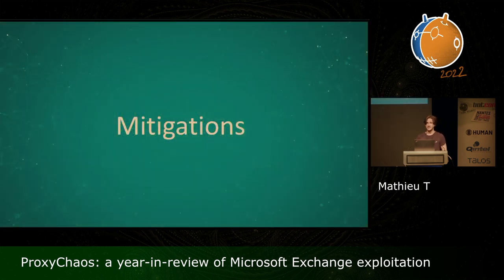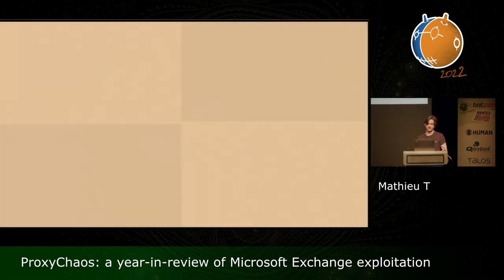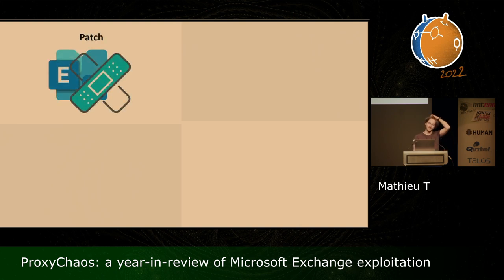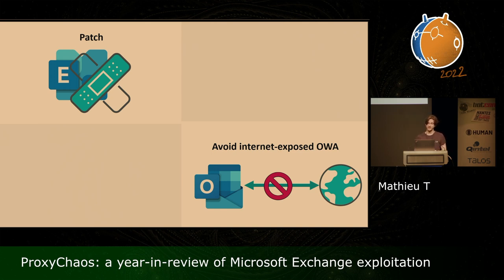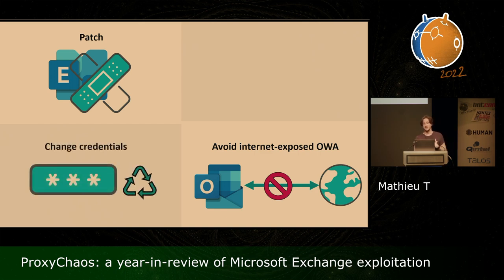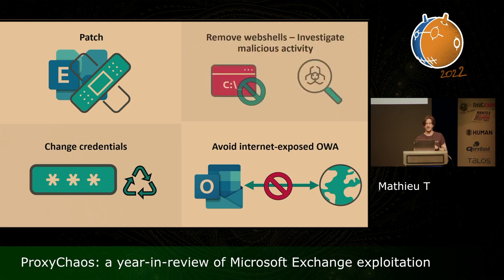To conclude, let's discuss the mitigations of such attacks. First and foremost, if you haven't done so yet, please patch your Microsoft Exchange servers. In case of a compromise — which is quite likely if you didn't patch — patching is of course not enough. Also avoid exposing your Outlook Web App directly to the internet, because that's how the attackers manage to scan the internet to find victims. And if you were compromised, of course change your credentials, look for web shells present on the Exchange server and remove them, and investigate malicious activity on your network because it's quite likely that the operators pivoted to other machines in your network.